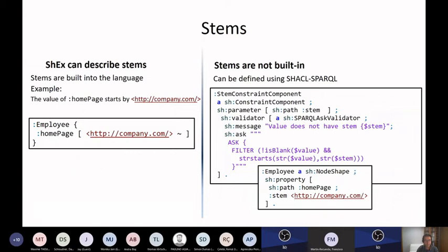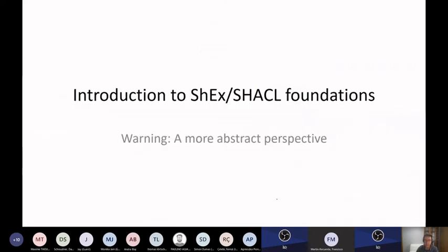Finally, there is this thing called stems. You can say the employee must have a property homepage which must start with company.com/whatever. In SHACL, you would do this with SHACL-SPARQL — you define a constraint component where you check that the stem starts with this value, and then you define this stem. But you need SHACL-SPARQL to do that.